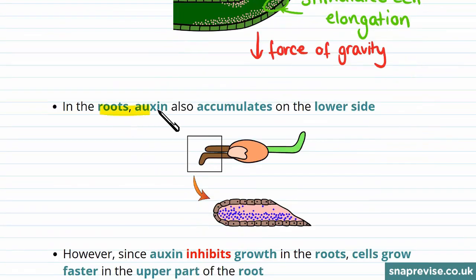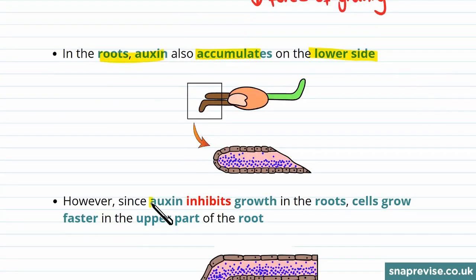In the roots, auxin also accumulates on the lower side. But as I mentioned before, auxin inhibits growth in the roots, so cells grow faster in the upper part of the root.